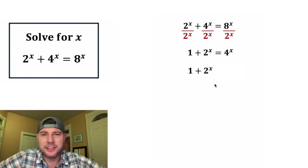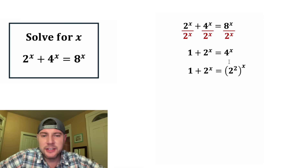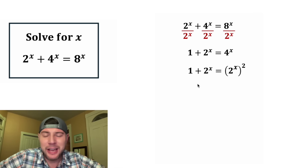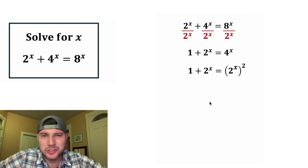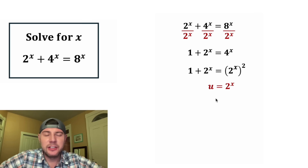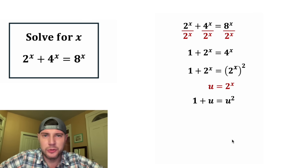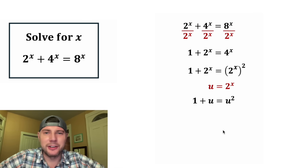Let's copy down the left-hand side, and on the right-hand side let's rewrite this 4 as 2 squared. To simplify, we can multiply the 2 times the x, or switch them. Now we have 1 plus 2 to the x equals the quantity 2 to the x, all squared. Let's do some u-substitution. If we let u equal 2 to the x, we can rewrite this as 1 plus u equals u squared.